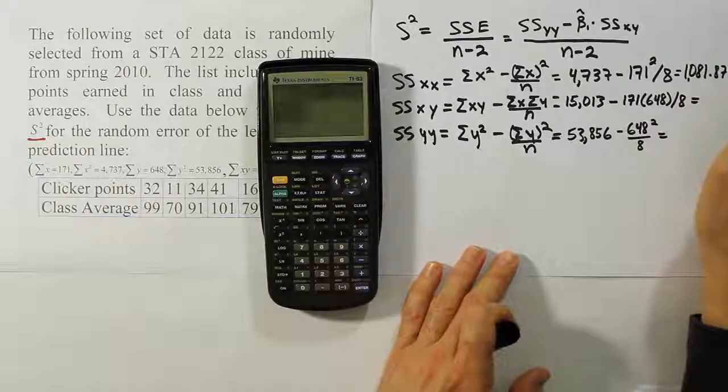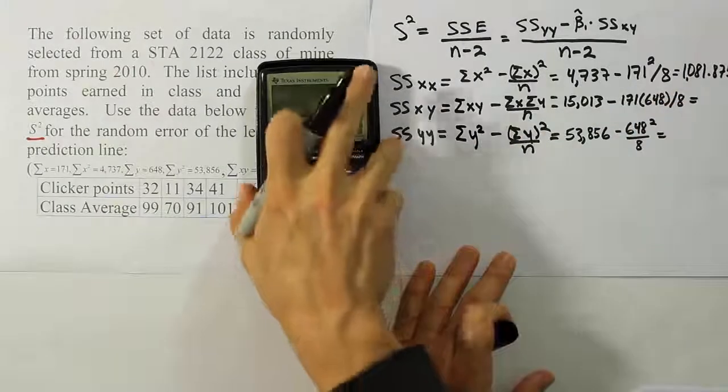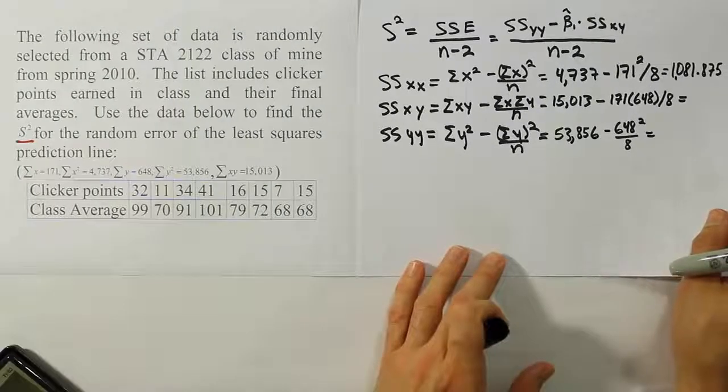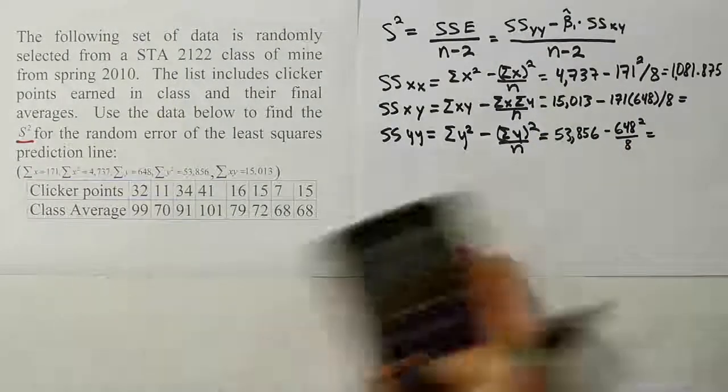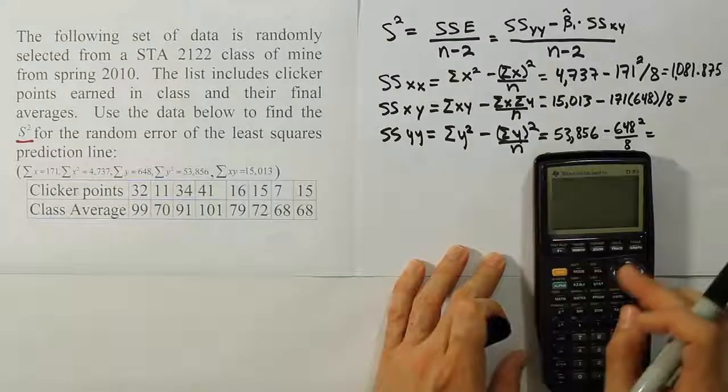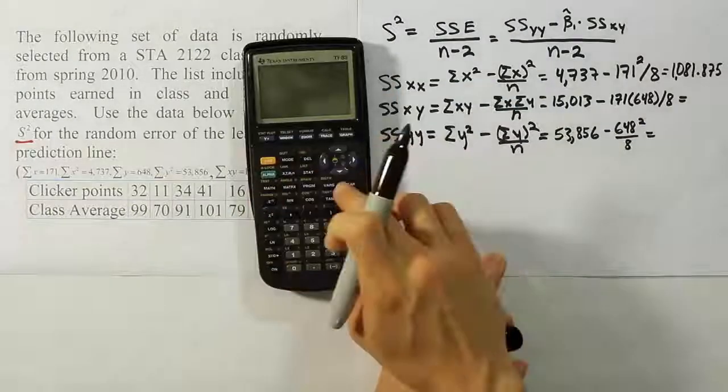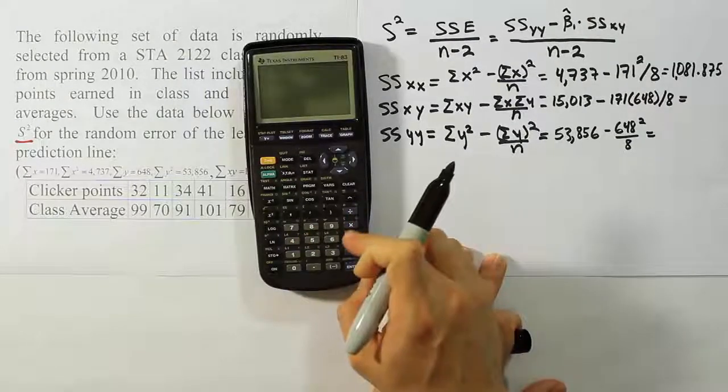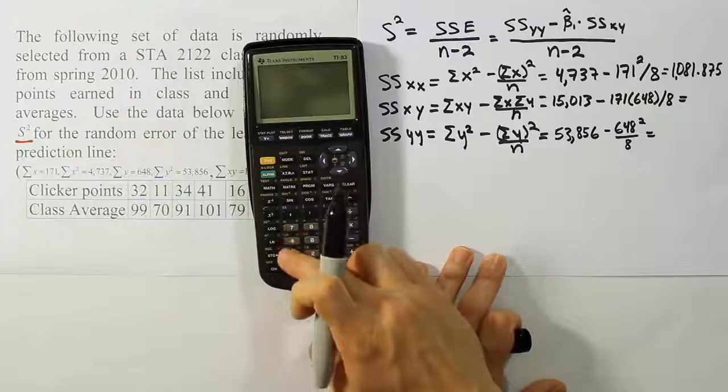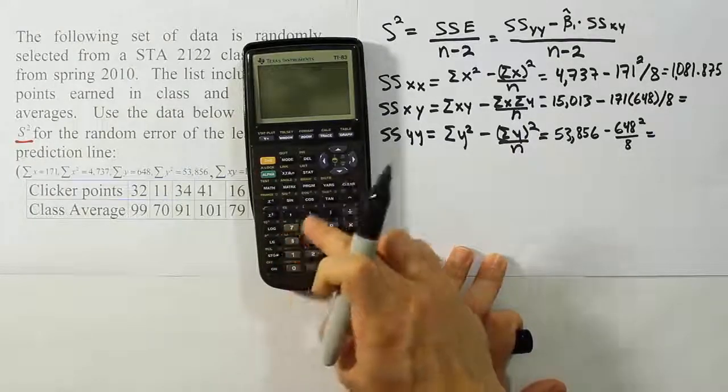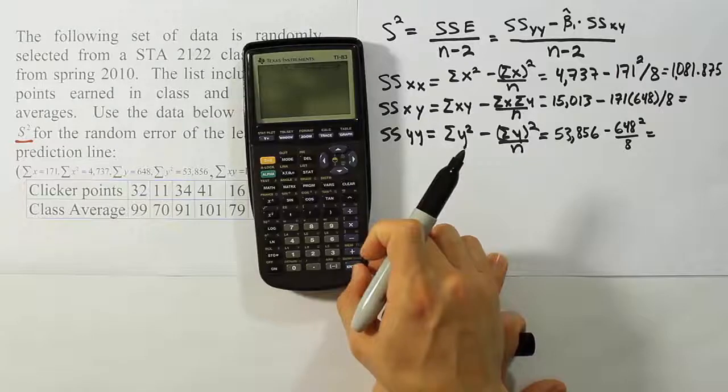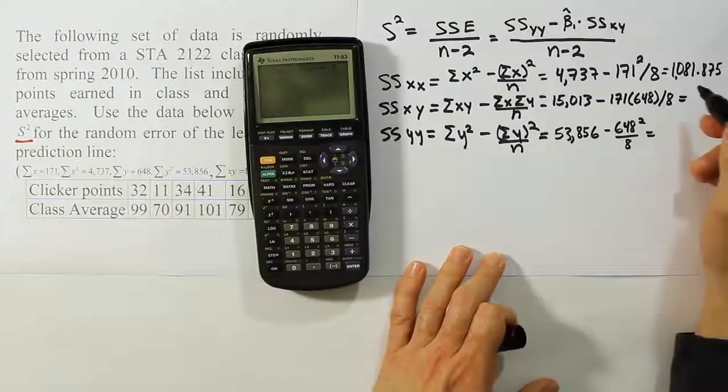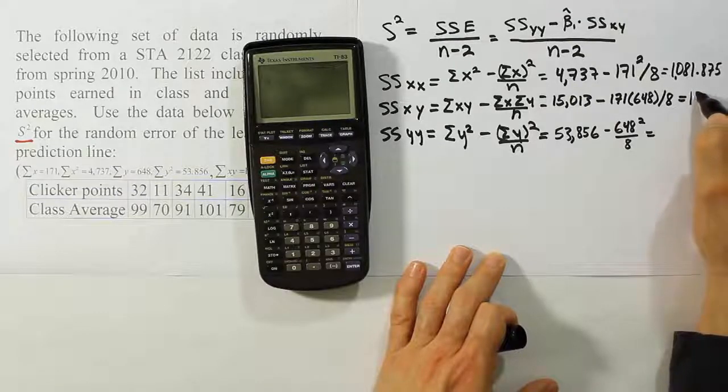Now let's look at our next value in the list. Our next value in the list is the sum of squares XY. So the sum of squares XY involves us doing 15,013 minus 171 times 648 divided by 8. So I just plugged in all of these numbers, hit enter and I get the answer 1162.